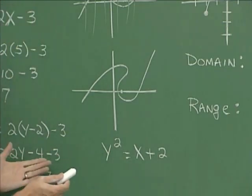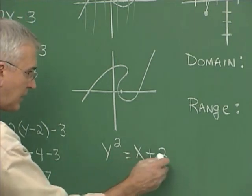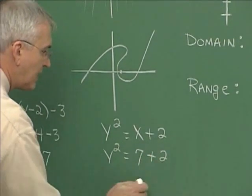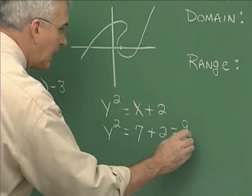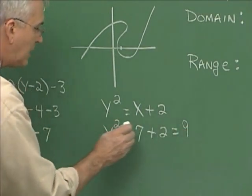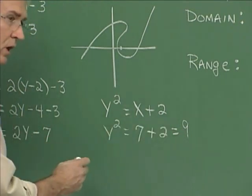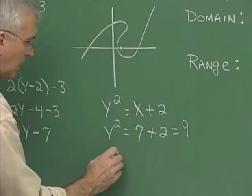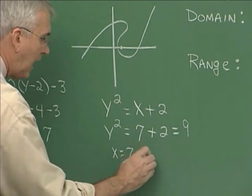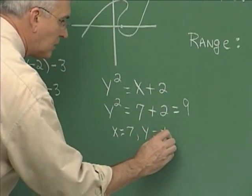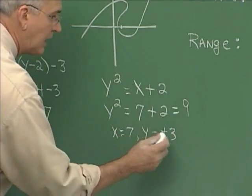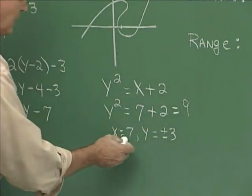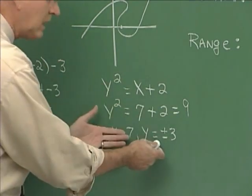From the strictly algebraic standpoint, if y squared is x plus 2, then I can choose one value of x — let's say 7. If x is 7, then y squared is 7 plus 2, or 9. So y squared equals 9 means y could either be 3 or negative 3. When x equals 7, y equals plus or minus 3 — one value of x is corresponding with two values of y.